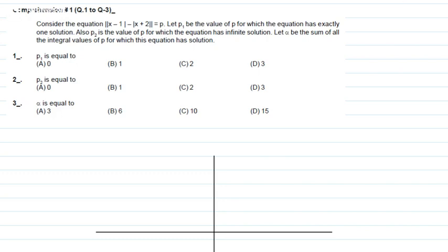Hello students, welcome to Dakshin I classroom. Comprehension 1: consider the equation. Let p1 be the value of p for which the equation has exactly one solution, p2 is the value of p for which the equation has infinite solutions, and find the sum of all integral values of p for which the equation has a solution.